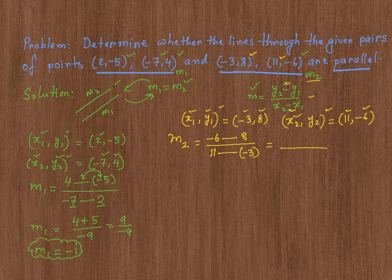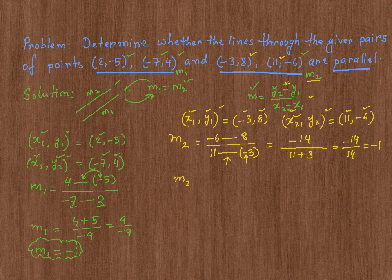On the numerator, negative 6 minus 8 is negative 14. On the denominator, 11 — and negative and negative is going to make it positive — so it's going to be 11 plus 3. So it's going to be negative 14 over positive 14, which is negative 1. So my M2 is equal to negative 1.